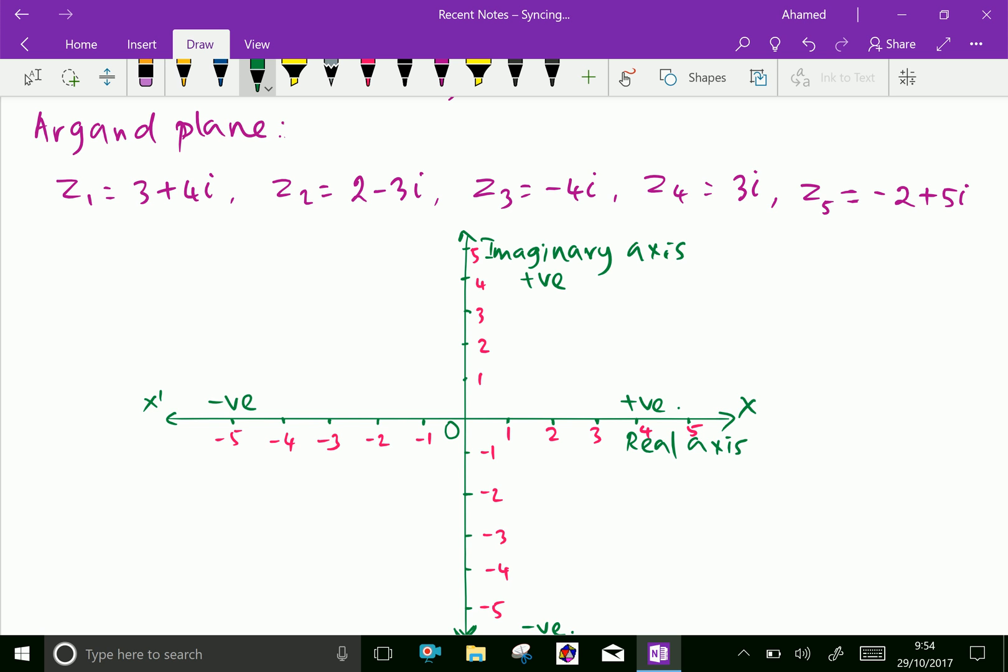Let us plot z1 equals 3 plus 4i. The real part is 3 and the imaginary part is 4. Here this is z1, that is z1 equals 3 plus 4i.